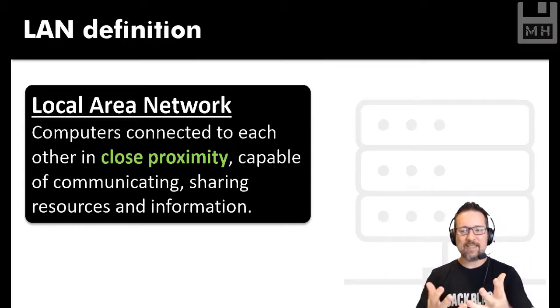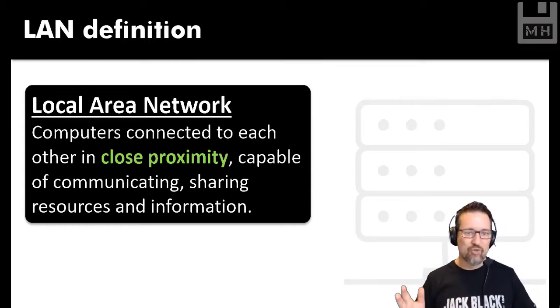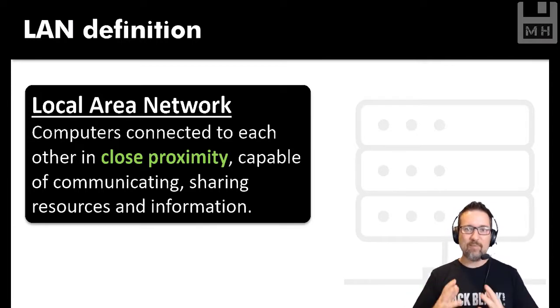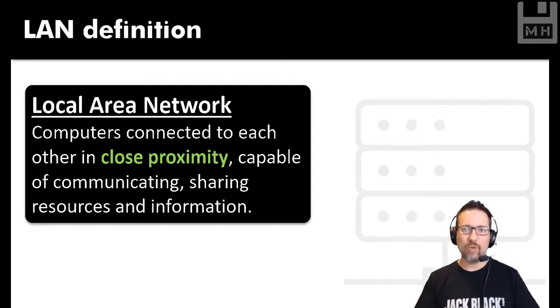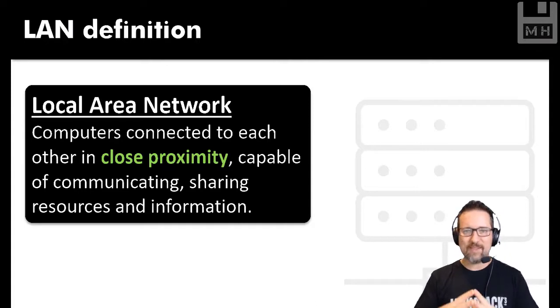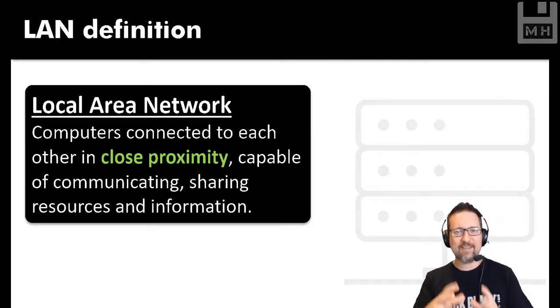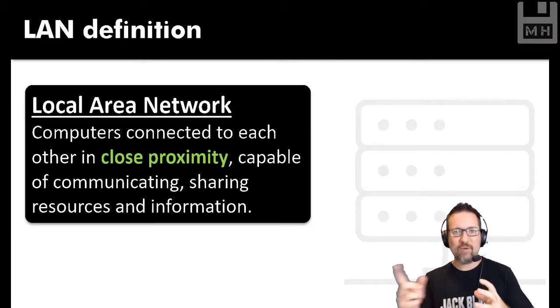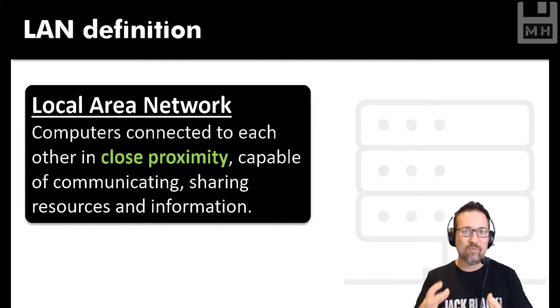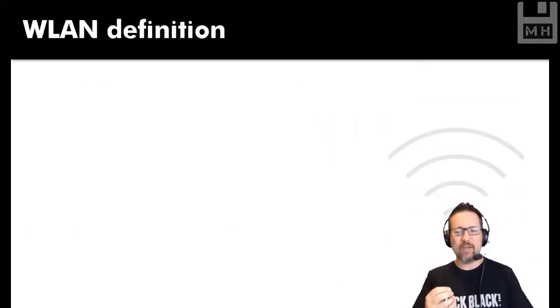A LAN covers a very set area — not across an entire country, that's too big. Something more like your school or a local business would be a local area network. Whenever you have two devices connected to each other that can share information or communicate, a network has been established.